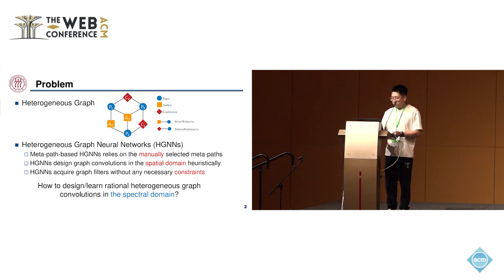At present, heterogeneous graph neural networks usually work as the main method to deal with these heterogeneous graphs. But existing HGNNs exhibit several limitations. The efficiency of metapath-based HGNNs relies on manually selected metapaths. The design of aggregation strategies by these HGNNs in the spatial domain is often heuristic, limiting their ability to learn arbitrary graph filters. These HGNNs obtain graph filters without necessary constraints. So there is a natural question: How should we design and learn rational heterogeneous graph convolutions in the spectral domain?